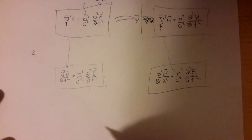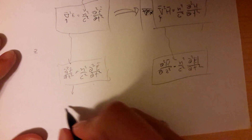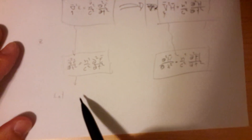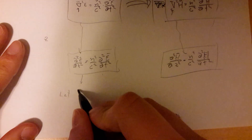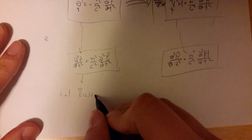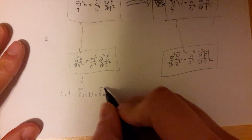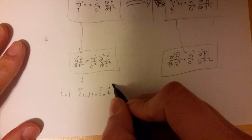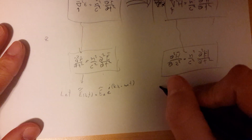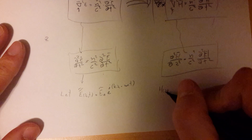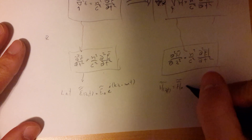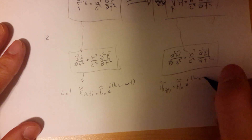We can simplify both equations by using complex notation. We let the complex electric field equal the amplitude E_0 times e^(i(kz − ωt)), and the same for the magnetic field: H_0 times e^(i(kz − ωt)).